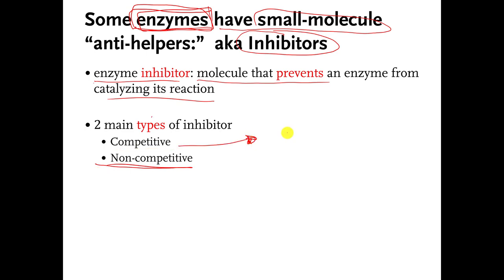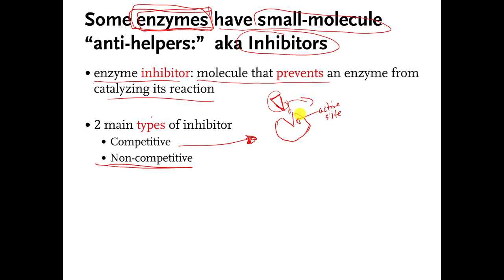Competitive inhibitors work like this. Let's pretend this is our enzyme. This little notch here, that little divot, is the active site of our enzyme. The active site is the part of the enzyme that has the shape that matches the shape of the reactant, which is also called the substrate. So our substrate fits in there and the active site converts the pizza slice into some new molecule. That's what the enzyme does.